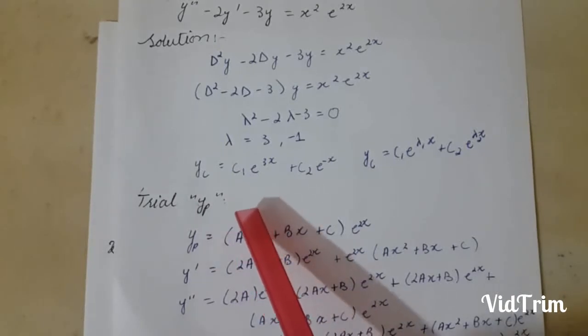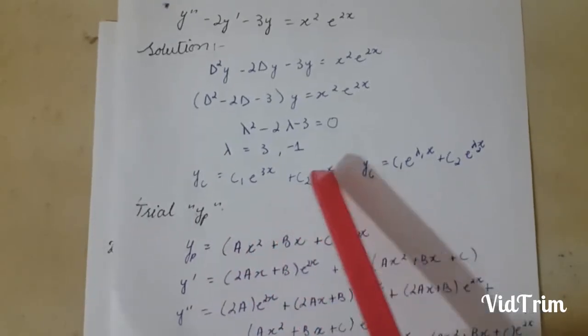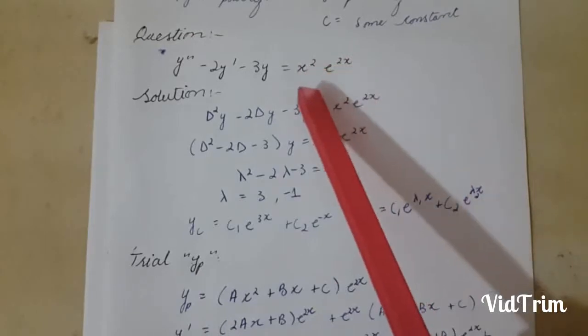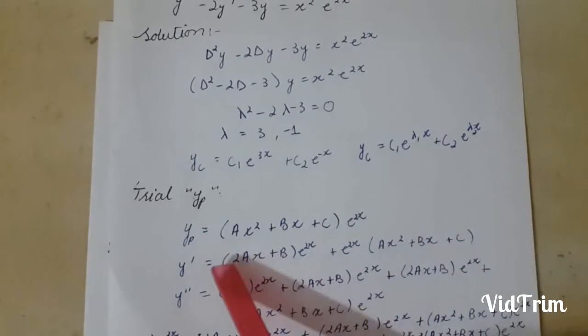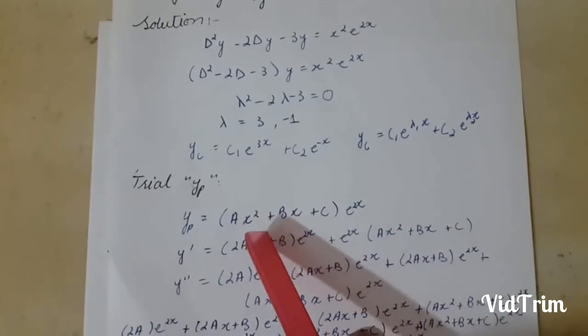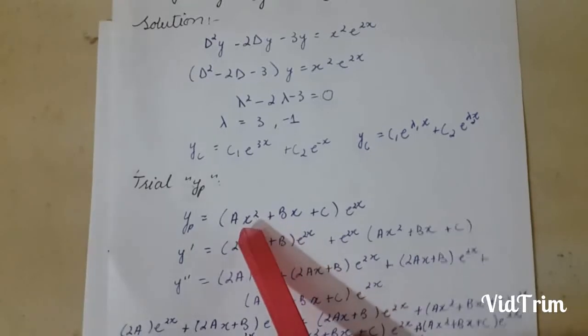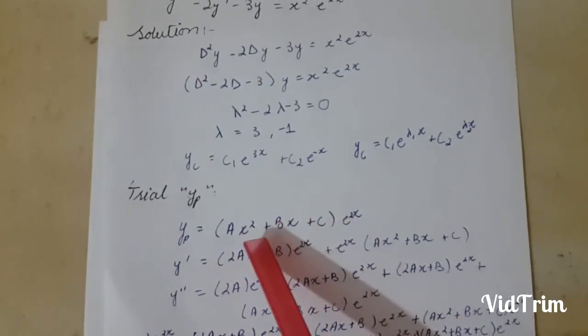We will suppose a trial yp. We know that we have x to the highest power 2. So I start from x squared. Here I take a,